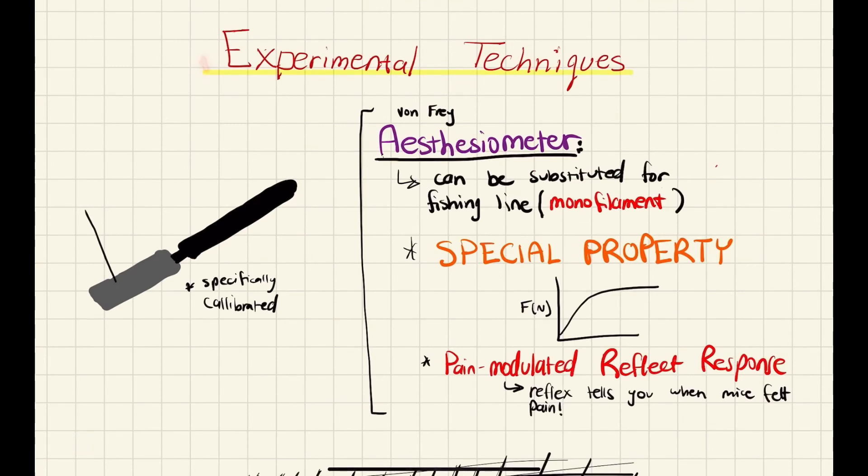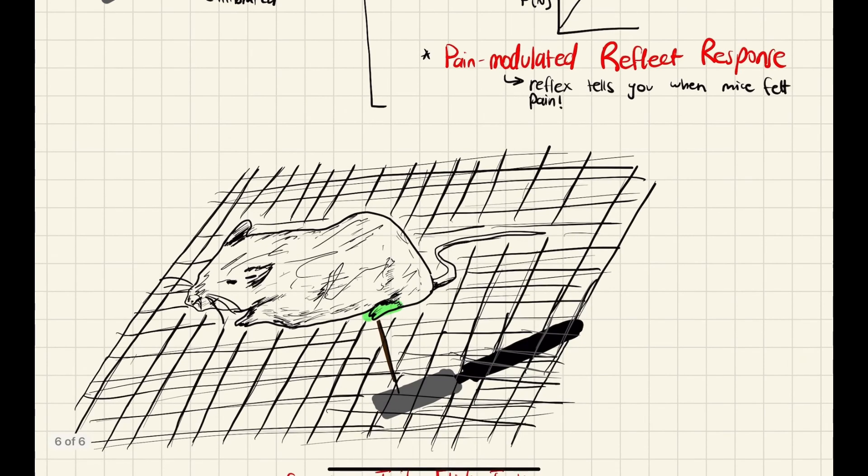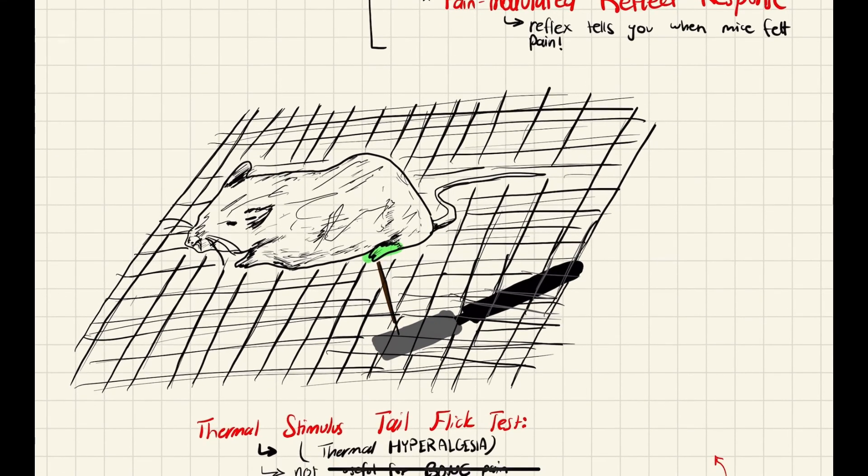So we're just going to be quickly going over some experimental techniques. The first one that we talked a lot about is this von Frey esthesiometer. But it's probably really expensive. It can be substituted for something much cheaper like fishing line, which is monofilament. And that shares the same special property, which is that at a specific tension, it provides a maximal force. And what that does is it allows each monofilament piece, depending on how thick it is, to be specifically calibrated to a specific amount of force. And that's useful in an experimental setting. So when you're measuring a pain modulated reflex response, you want to know when the mice felt pain. And that's why these devices are so useful. So you have a mice in this wire grid, and your esthesiometer can just poke through one of these holes and hit the mice's foot. You don't want to hit its nose or anything, and you want to do it as gently as possible.